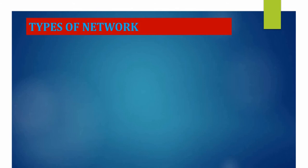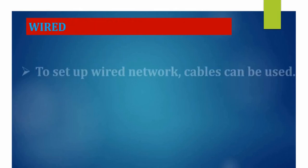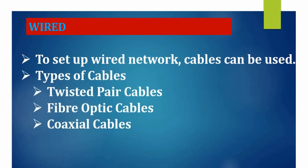Moving on to types of network — wired and wireless. To set up a wired network, we need cabling. The wiring used in a wired network can be either twisted pair cables, fiber optic cables, or coaxial cables. Twisted pair cables are developed with copper wires. Fiber optic cables enable various transmission techniques.